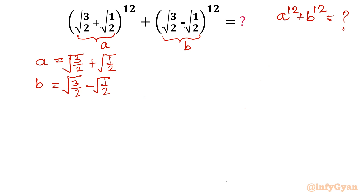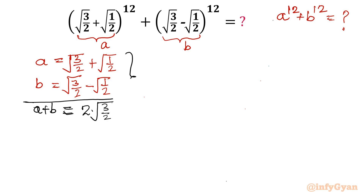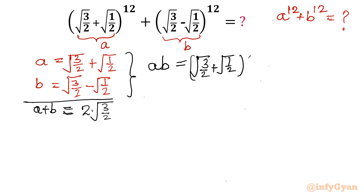Once I add both equations I will get A + B. So A + B = 2 × √(3/2). Now from the same A and B values I can evaluate A × B, the product of both numbers. I can see it is a difference of two squares: (√(3/2) + √(1/2))(√(3/2) - √(1/2)).